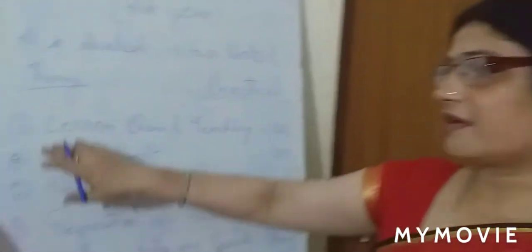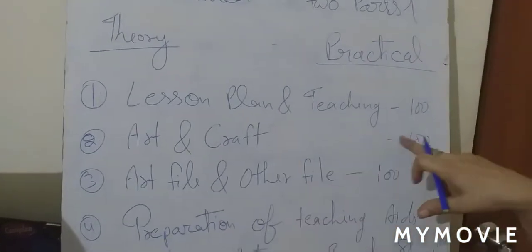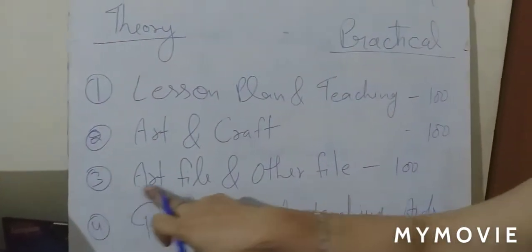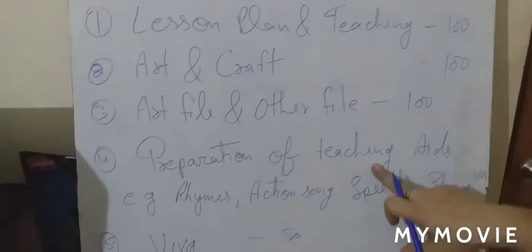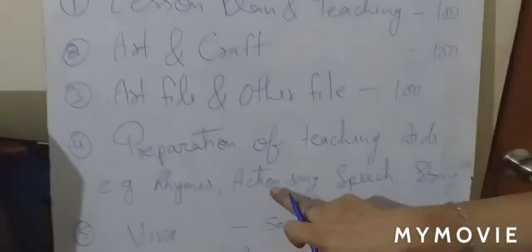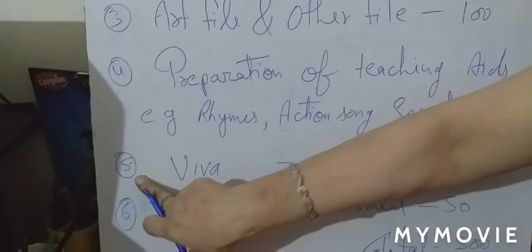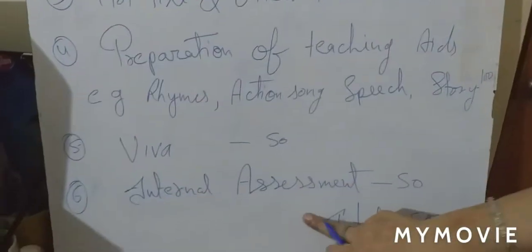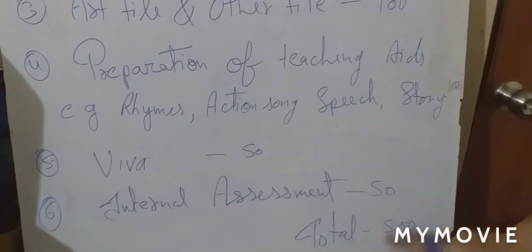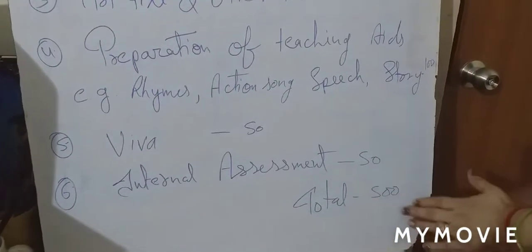Now let's talk about the practical. First is lesson plan and teaching, each 100 marks. Second is art and craft, each 100 marks. Third is art file and other file, each 100 marks. Fourth is preparation of teaching aids — for example, rhyme, action song, speech, story — also 100 marks. Fifth is viva, which is 50 marks. Sixth is internal assessment, which is 50 marks. The total practical marks are 600, which you will see in your mark sheet.